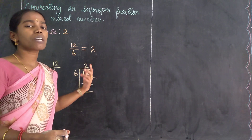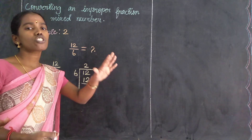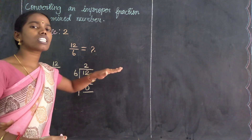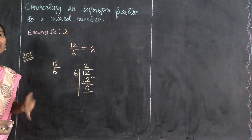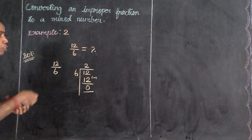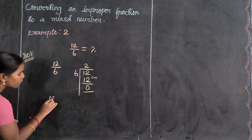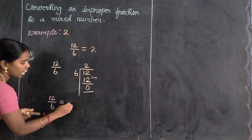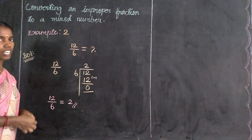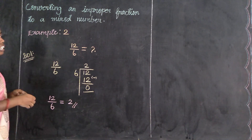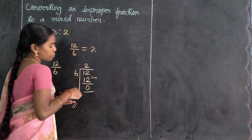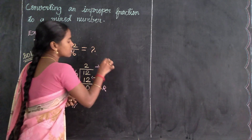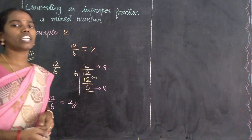So in this improper fraction, converting to a mixed number we find only a whole number. Why? Because the remainder is 0. The whole number is found, not a mixed number. So the answer for this improper fraction is only 2.